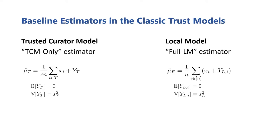Now we can define the baseline estimators in the classic trust models that we'll use to compare any hybrid estimators against. For the trusted curator model, we define the TCM-only estimator, which uses only the TCM user's data to compute an empirical mean, then adds noise calibrated to ensure differential privacy. For the local model, we define the full LM estimator. Here, all users add the same scale of calibrated noise to their own data to ensure differential privacy, then they report their privatized data. The full LM estimator just takes these reports and computes a simple mean on them.